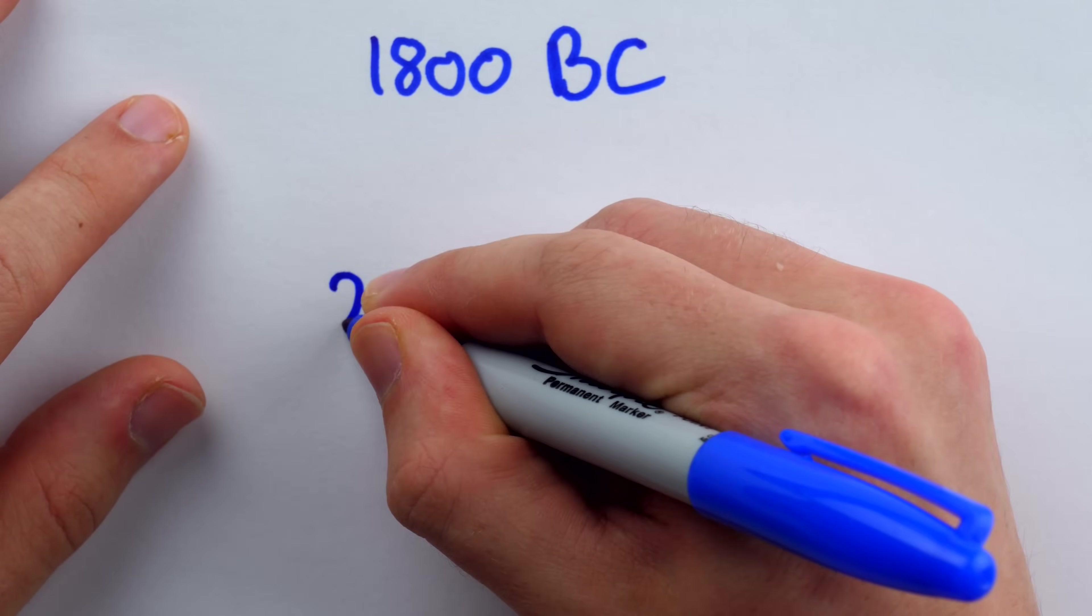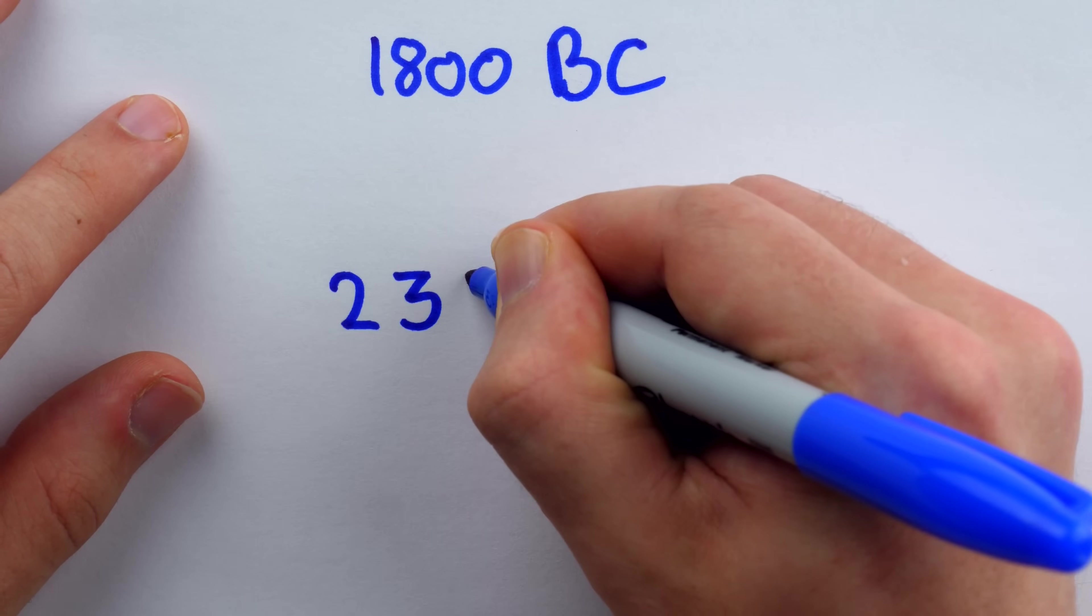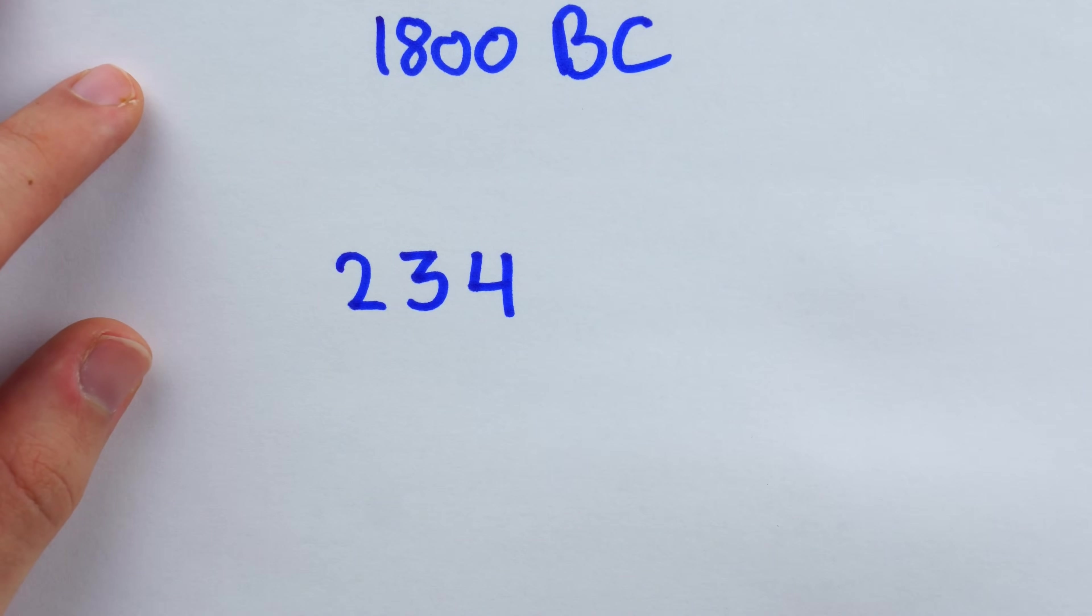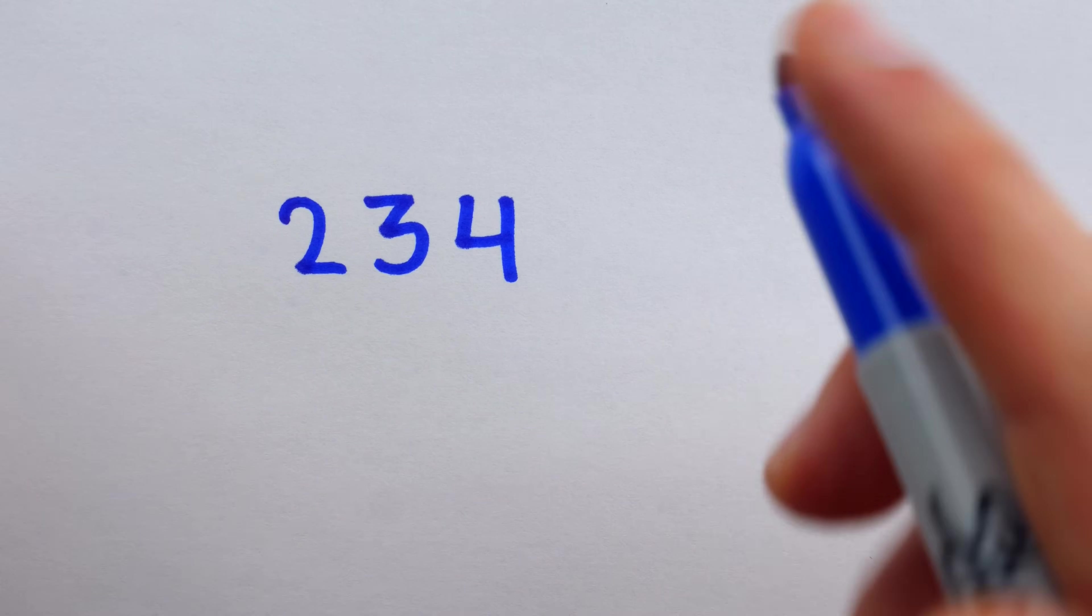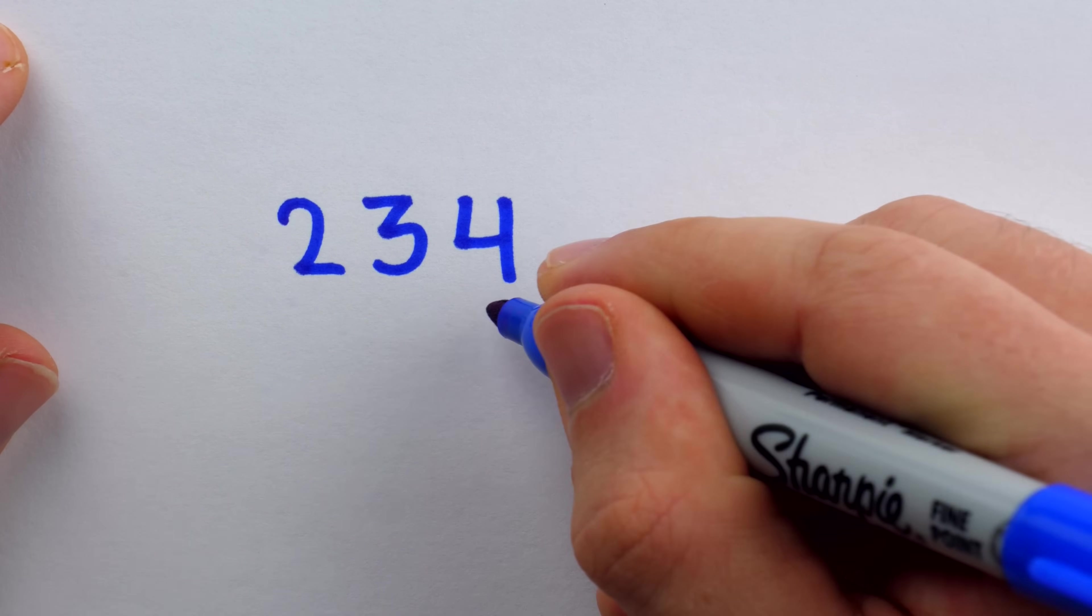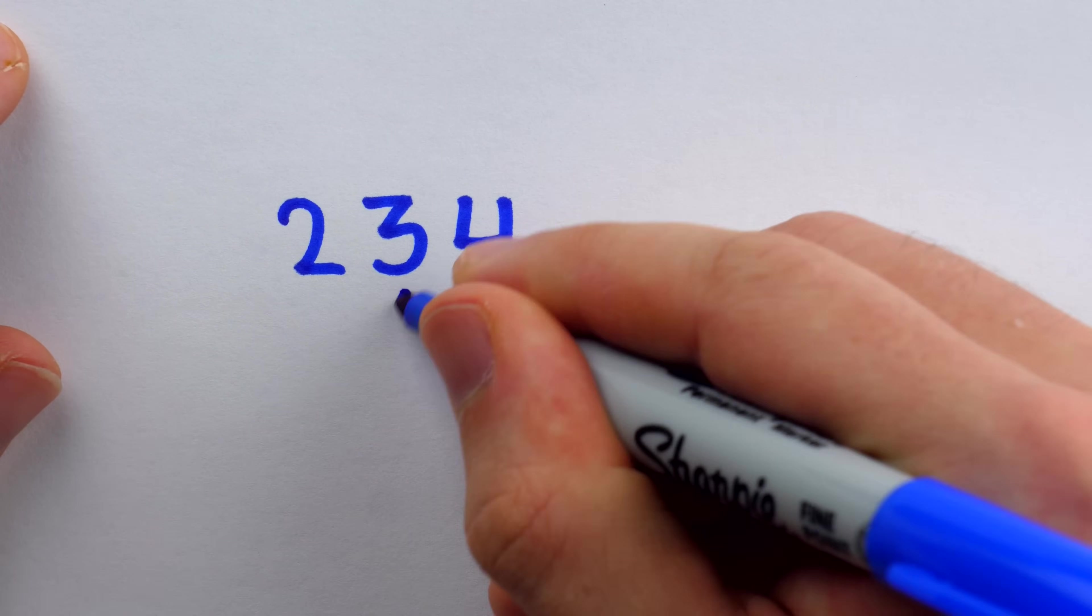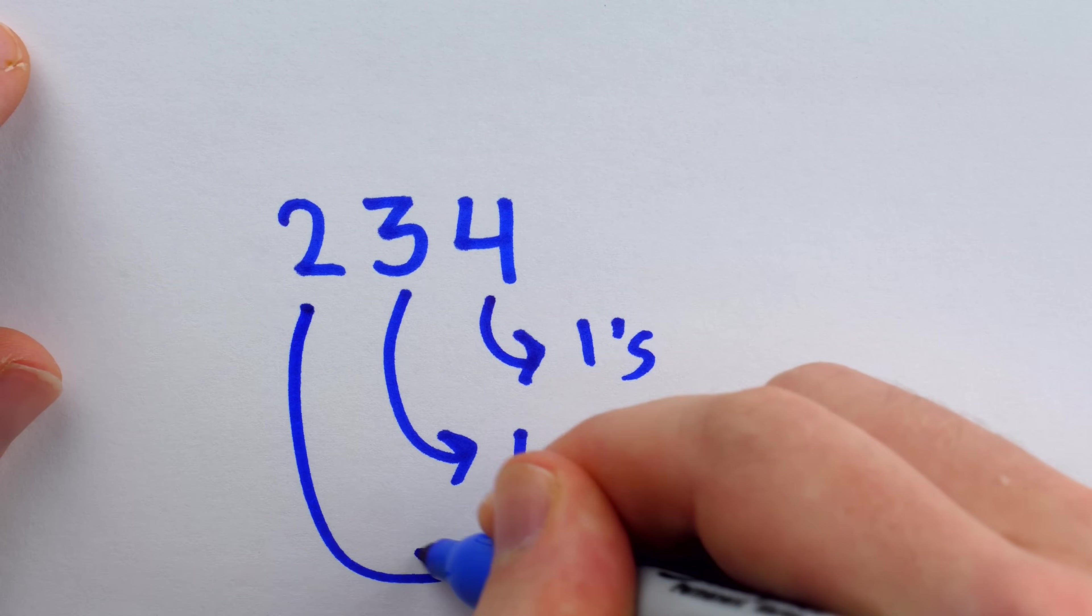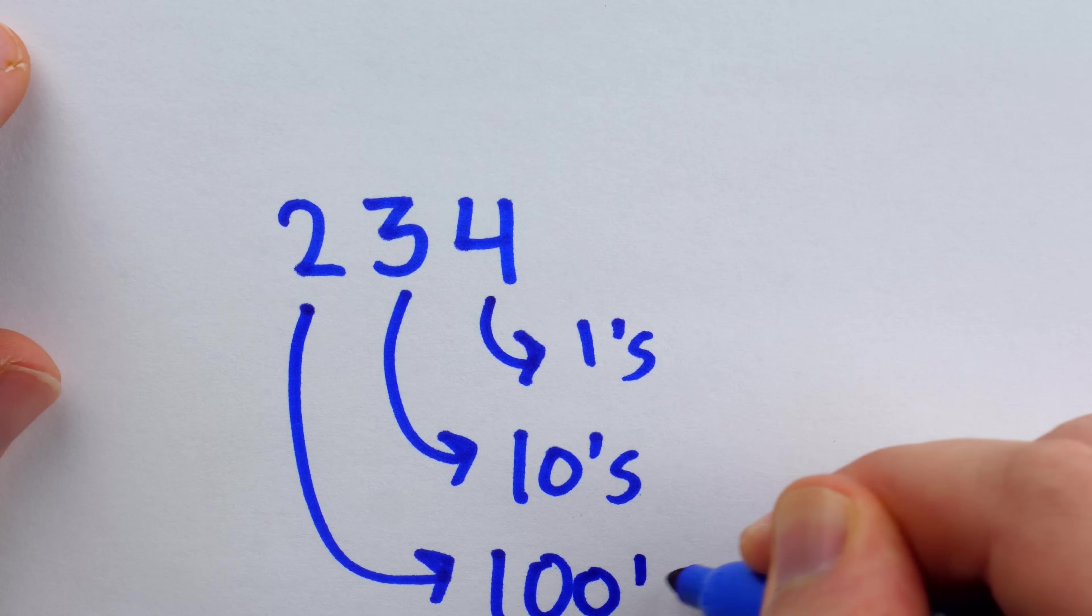In our system, if you take a number like 2, 3, 4, each digit represents a different quantity based on its position in the number. The positions increase from right to left, so the 4, as we know, represents four 1s, the 3 represents three 10s, and the 2 represents two 100s.